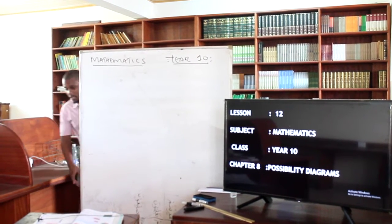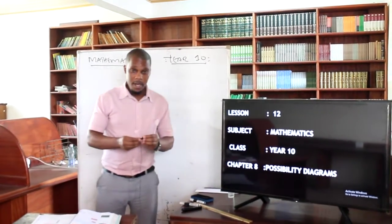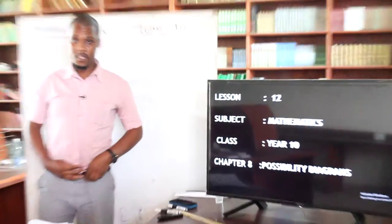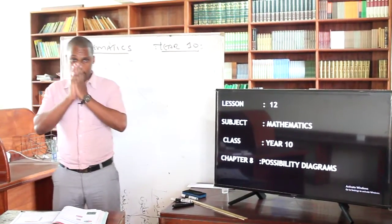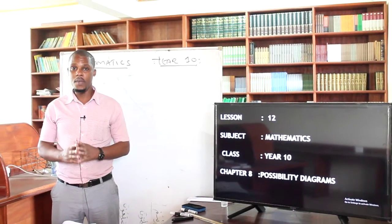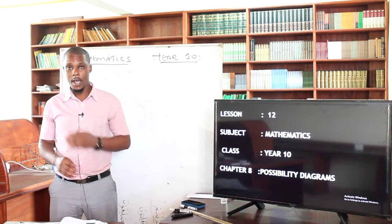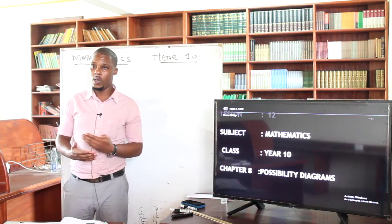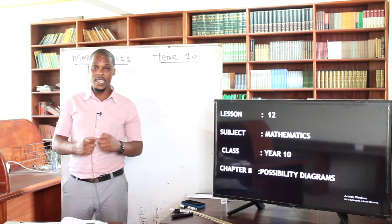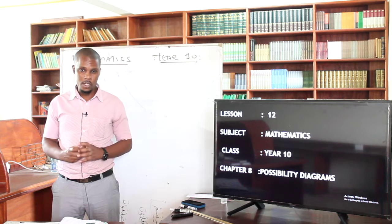So my dear students, how are you doing? Welcome to our today's lesson. I think that you have been keeping safe at home, so I will be able to continue from where we left yesterday. For today's lesson, I want us to go directly to where we are going to deal with the Possibility Diagram. We are going to deal with the Possibility Diagram — these are the diagrams that are going to assist us when you are dealing with the Theoretical Probability.